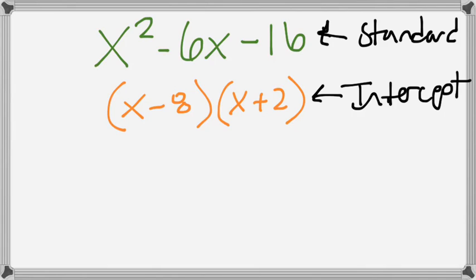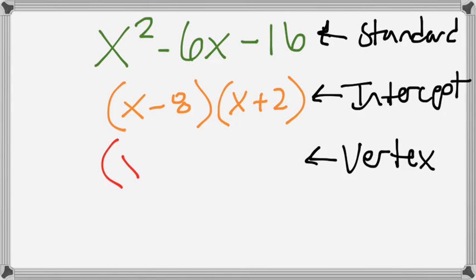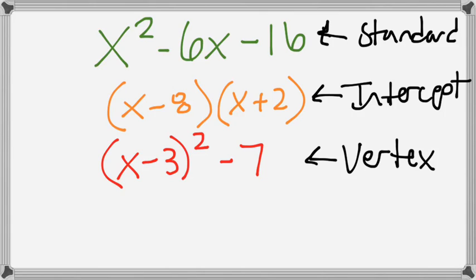There's another form we're going to learn about called vertex form. The vertex form of this particular equation is going to be x minus 3 squared minus 7. So that's the vertex form of this equation. So there's standard form, intercept form, and vertex form.